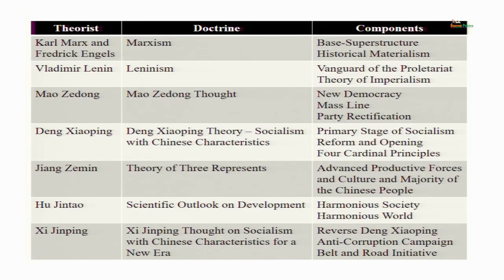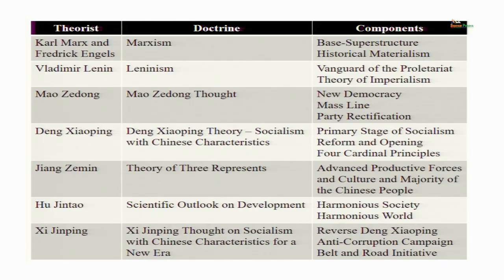The Chinese state believes in all this — they believe there is a base and superstructure and that history moves through this systematic process of change. China is a socialist society, although this socialist society is not very developed. This is known as the primary stage of socialism, a concept introduced by Deng Xiaoping.